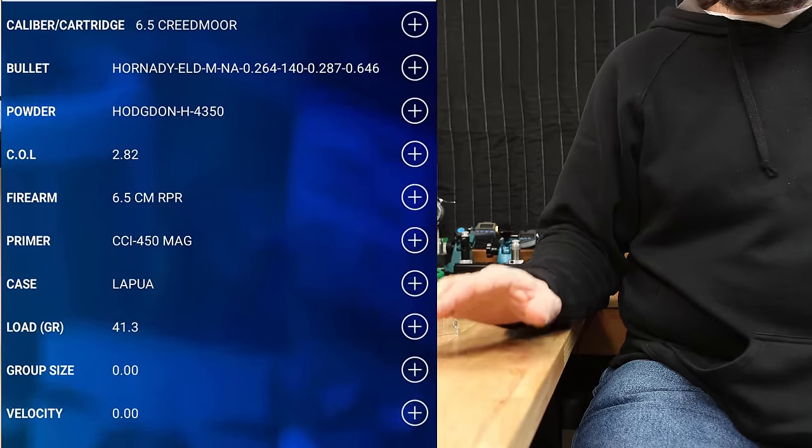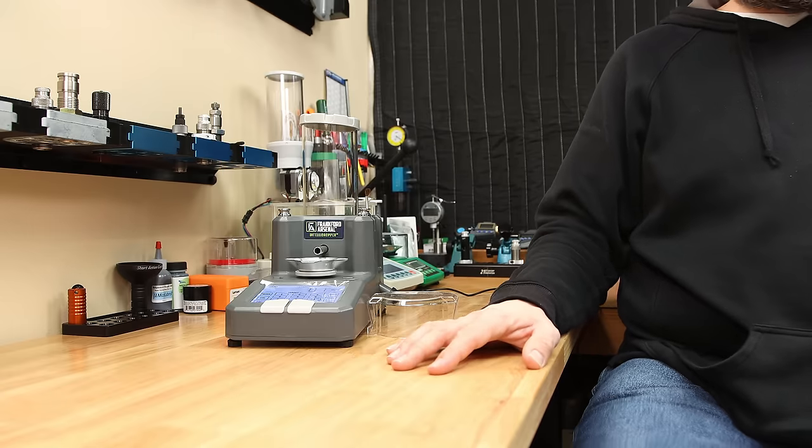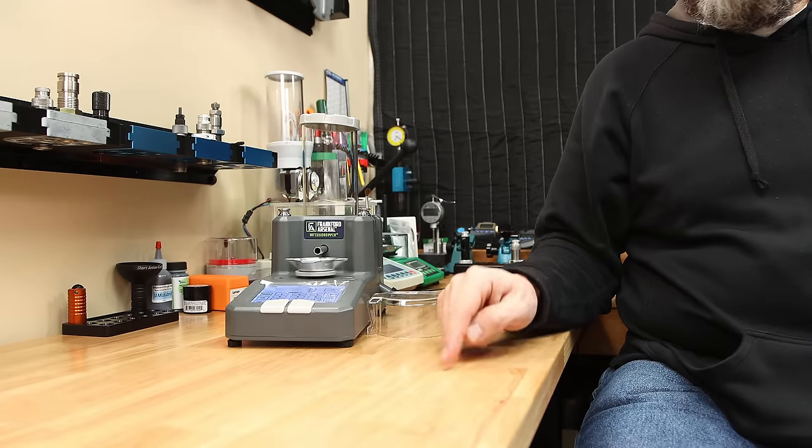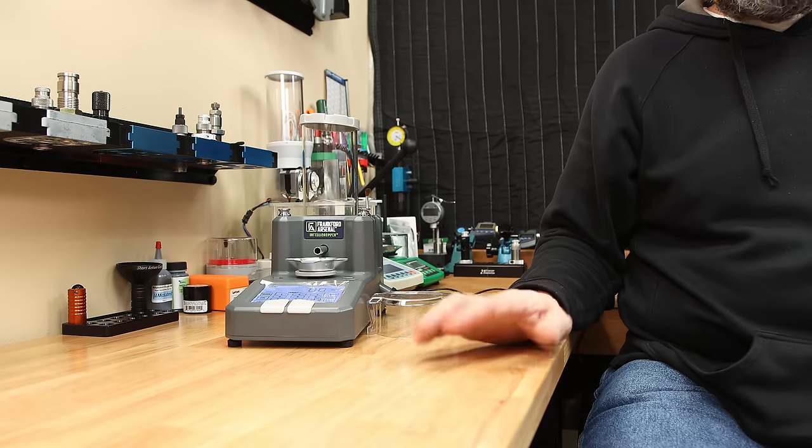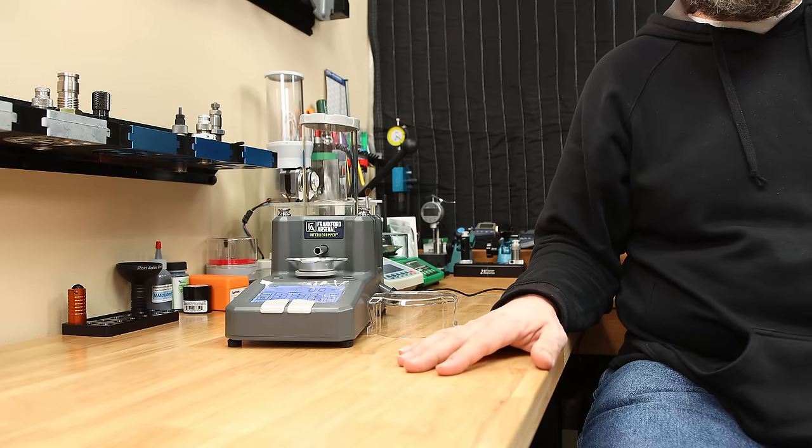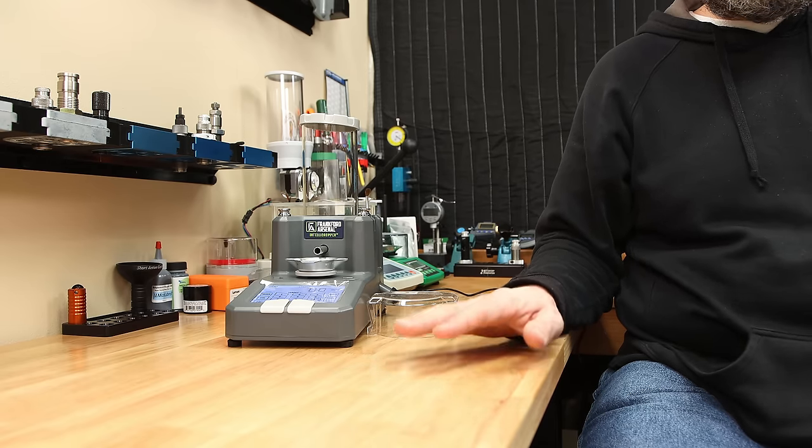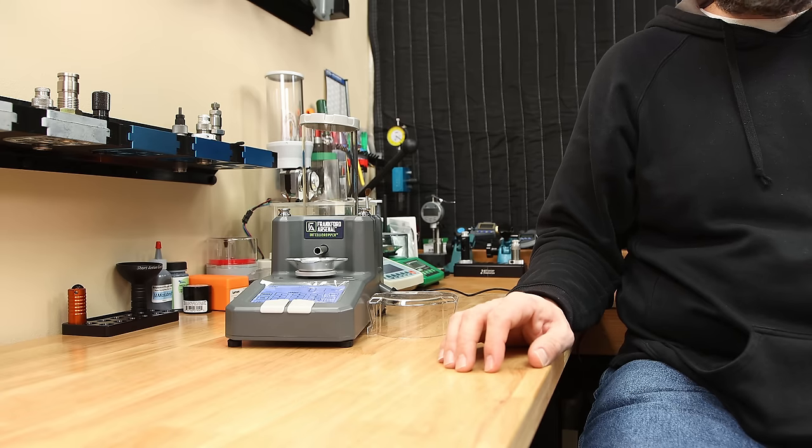With all of your cartridge details, not just the charge weight, you can simply go to the database, click your load, and send it to your device. And that, it's going to be set. Now, I'm still going to recommend that you write everything down in your logbook. All your data written down is very important. But I still think it's a very neat feature.